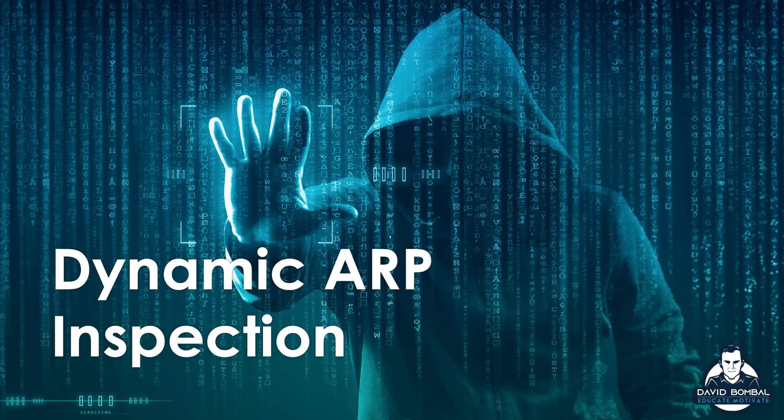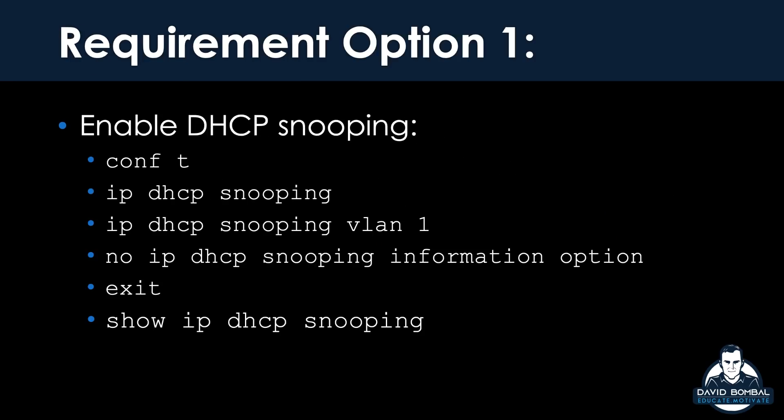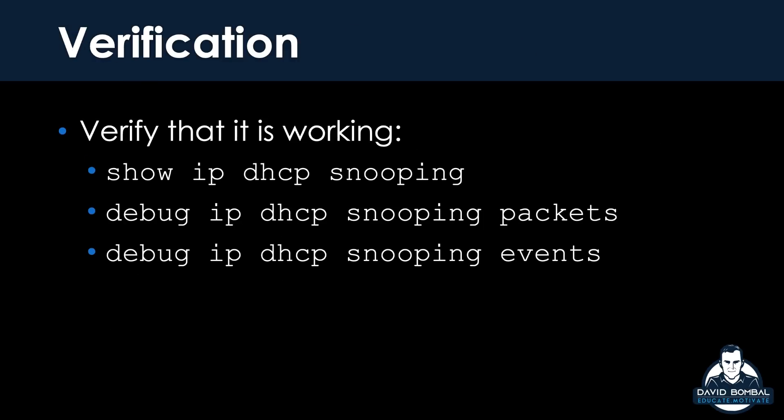I'm going to show you how to implement DHCP snooping, dynamic ARP inspection, and then stop Kali from sending traffic when it changes its MAC address — stopping our poisoning attacks. I've added the presentation below this video. It shows you the network I'm using and how to configure dynamic ARP inspection, with links to Cisco and other websites. Use the menu here to jump to a specific topic if you want to.